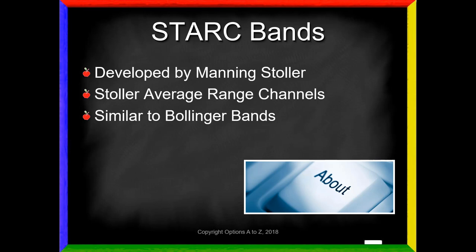STARC Bands, like a lot of different band indicators out there, are similar to Bollinger Bands in the sense that we're using some type of measure for volatility. We're just saying give me some extension of that volatility to the upside and some extension to the downside — let's widen out this range a little bit. So STARC Bands are an upper study; they will overlay on your price charts or candlesticks, and they are going to have an upper and a lower band, very similar to Bollinger Bands.